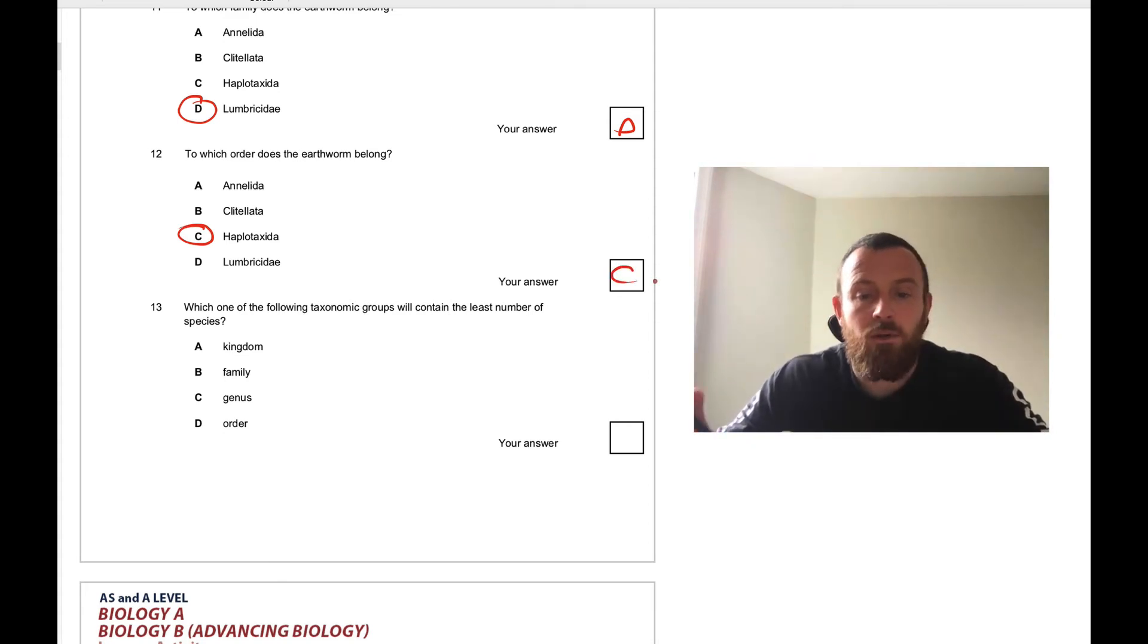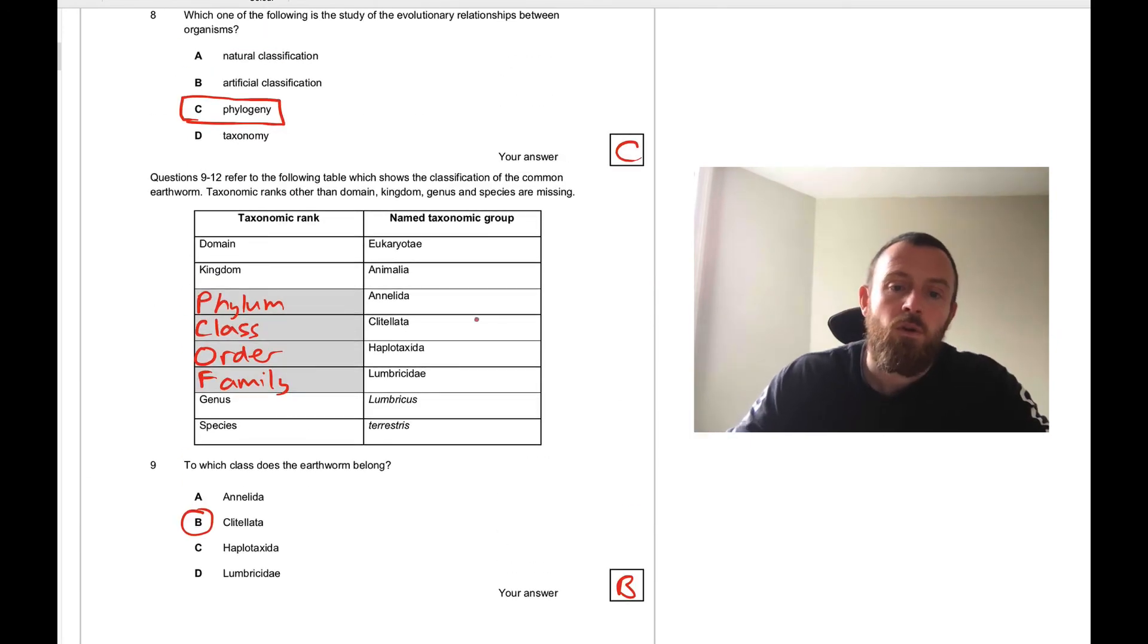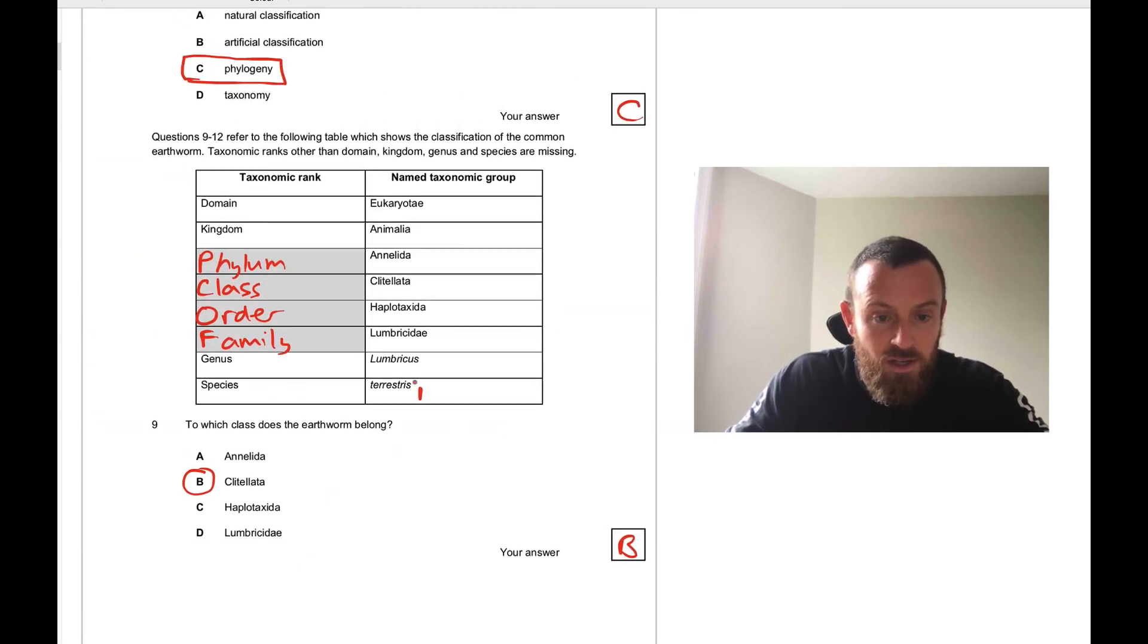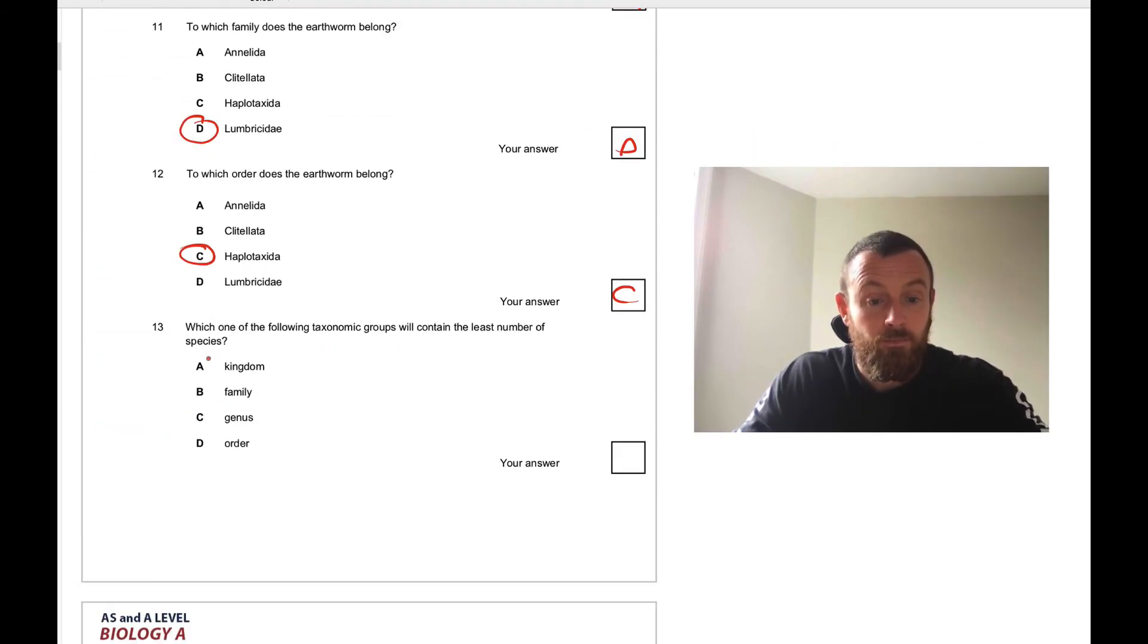Which of the following taxonomic groups will contain the least number of species? Let's consider that again. Down at the bottom, in this bottom rank there's only one, this is the one species. Now a genus may contain depending on the genus, it might contain 20 species or two species or only one living member of the species. For example we are the only member of the genus Homo sapiens, but there used to be more different species in our genus like Homo neanderthalensis, Homo floresiensis, Homo habilis. We get more and more numbers of species going up. So which is going to have the least? It's going to be whichever one is the lowest. So it's genus.